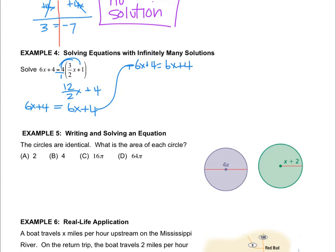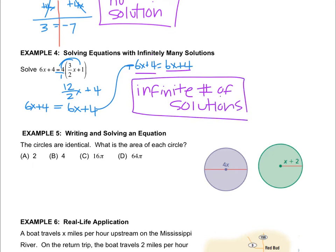Wait a second, that is the exact same thing on both sides. When you have an equation that says the exact same thing on both sides, of course it's equal. They're already equal, so what you write is infinite number of solutions. That means that any number in the entire universe that you plug into this equation is going to make it true. There's an infinite number of possibilities for this equation.